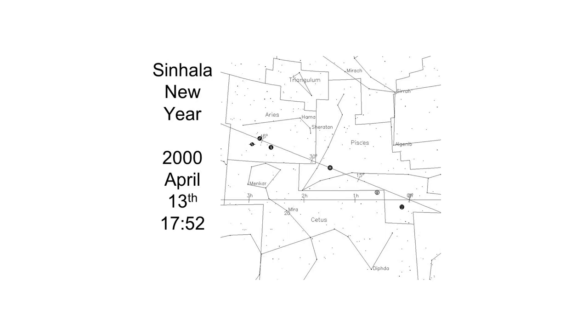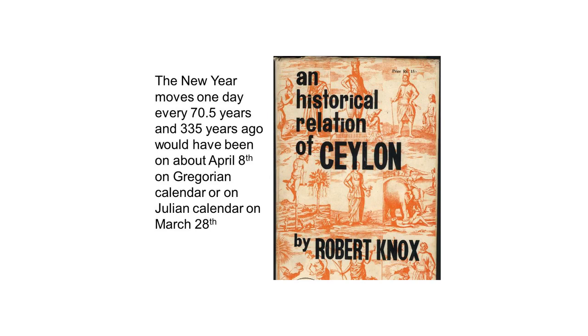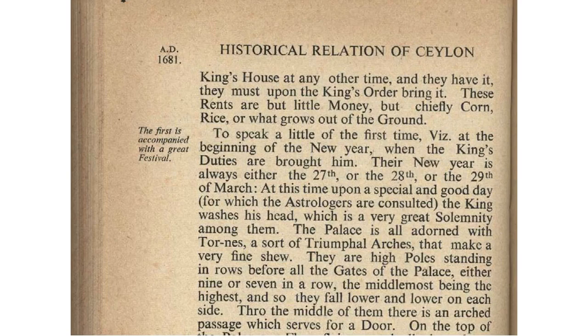The spot in the sky, which is actually in Pisces, is considered the new year point when crossed. That spot is called the First Point of Aries. If you go back about 335 years — to when Knox published the 'Historical Relations of Ceylon' — you find a reference where he mentions the new year celebration.